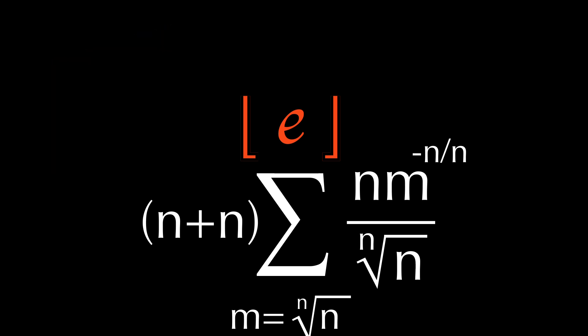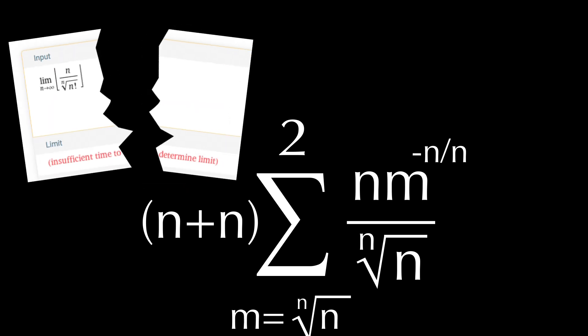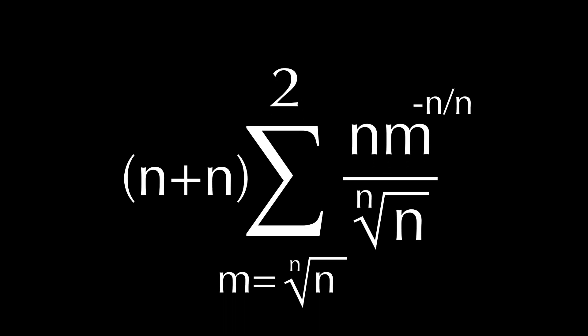Now getting the floor of e simply makes this into 2. At least, I'm fairly confident it does. Like I said, floor functions and limits quickly break Wolfram, and I had to rely on my own conclusions.